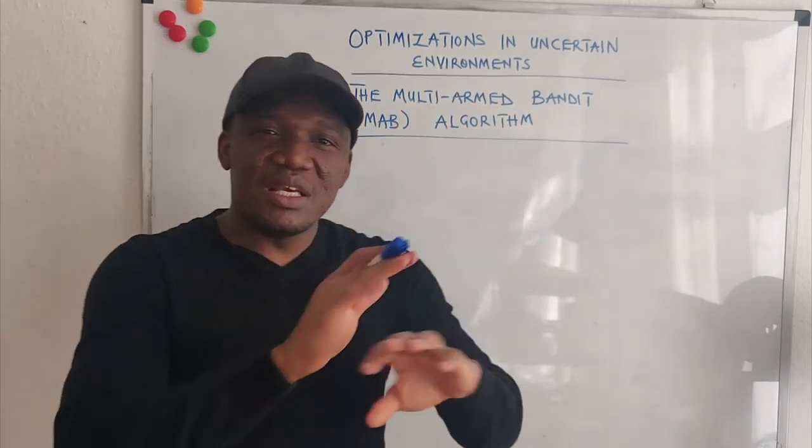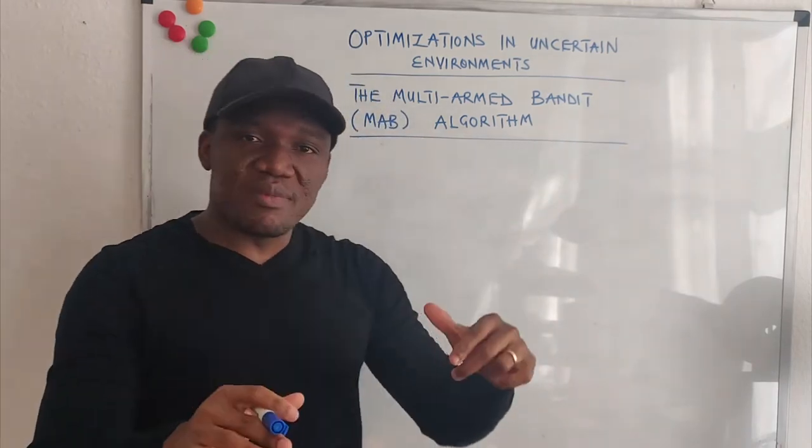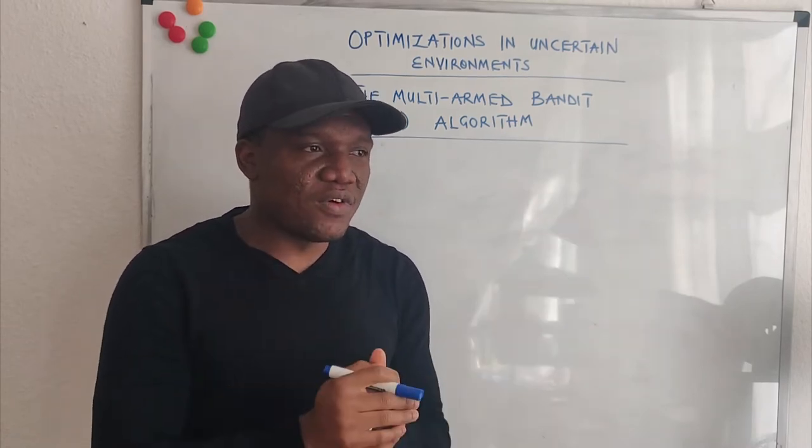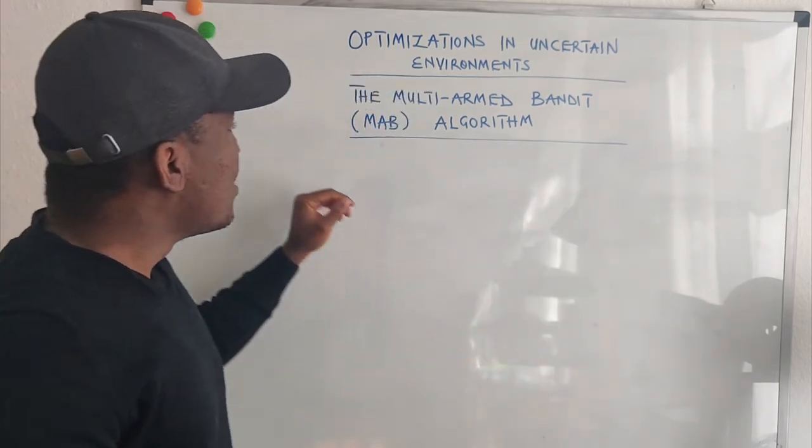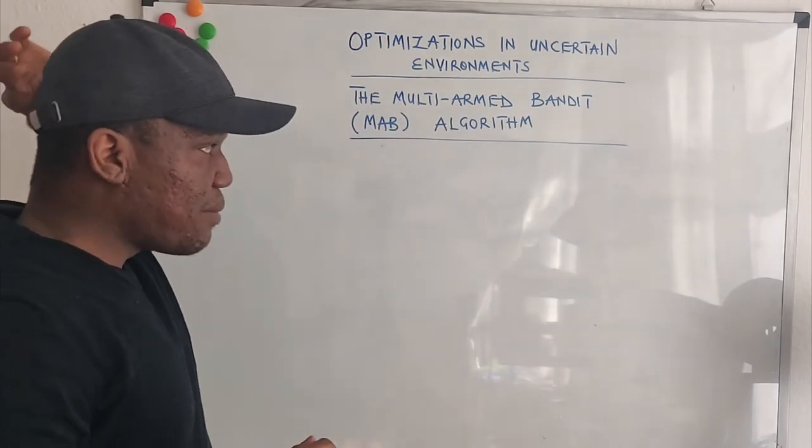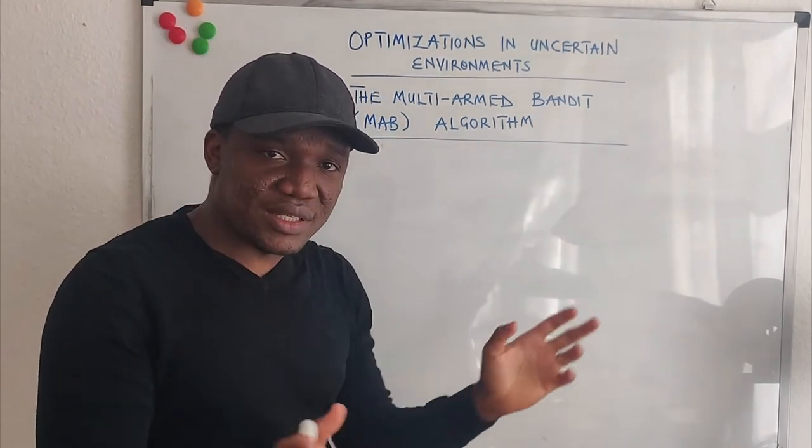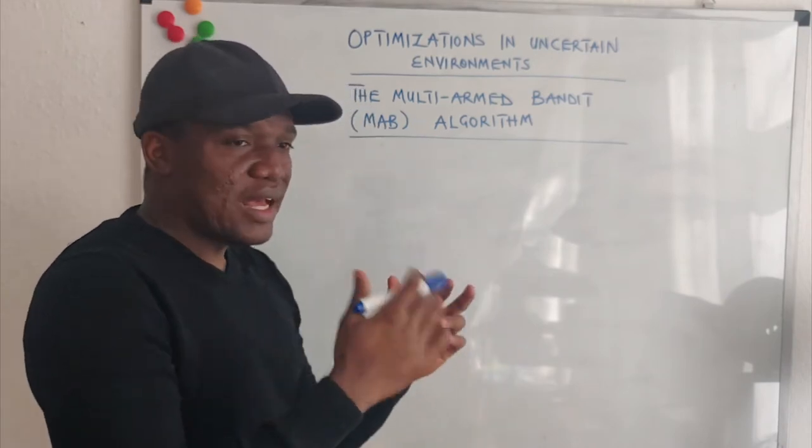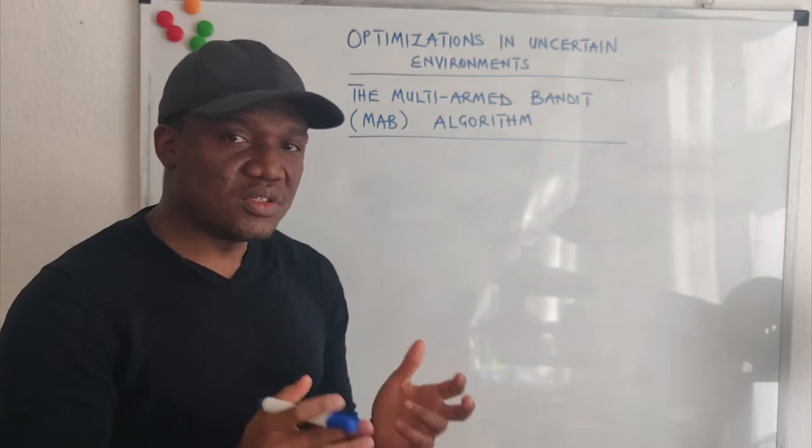The Multi-Armed Bandit Algorithm, trust me, is a very simple algorithm that you'll be able to implement and you'll use it to be able to optimize for actions in most uncertain environments. In most textbooks, when they are teaching Multi-Armed Bandit, they use a casino as an example. So I'm going to follow suit and then use the casino example to explain the algorithm to you. And then I'll have another section where I explain the algorithm to you in the context of our robot. And then we write the code.